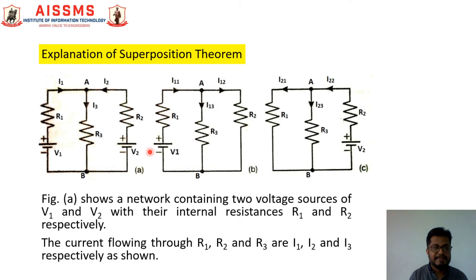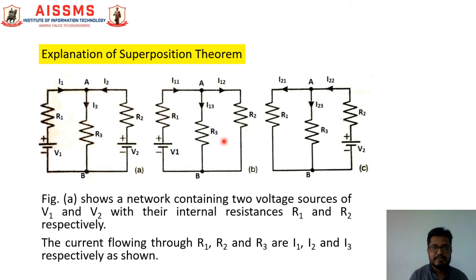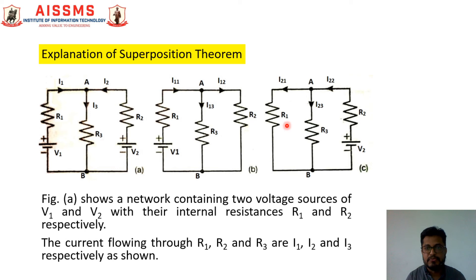In the next step, let us consider V2 source acting alone. So replace V1 source by its internal resistance R1. This circuit is shown in Figure C. In this case, I21, I22, and I23 are the currents flowing through resistances R1, R2, and R3. By using a suitable network simplification technique, we can easily find out the current flowing through branch AB.